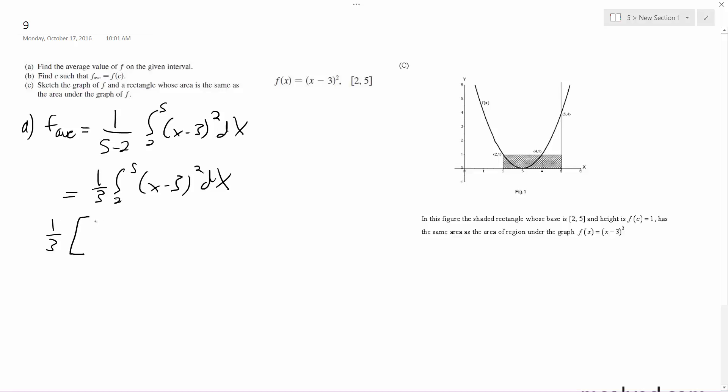One third, x minus three cubed over three, from two to five. We end up with equals one...